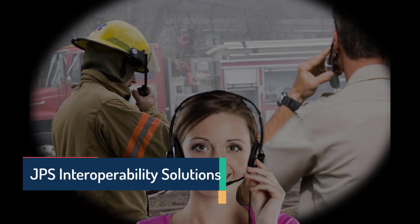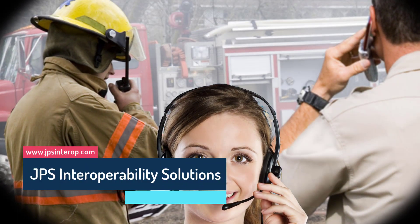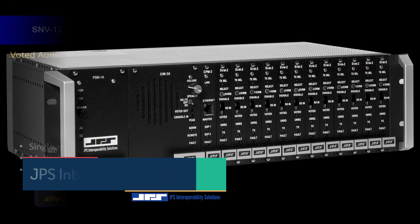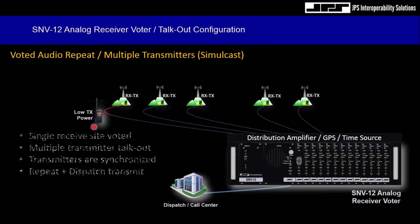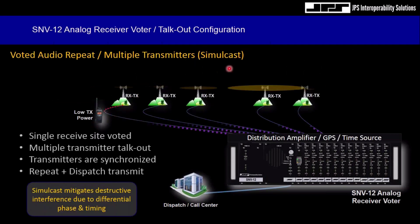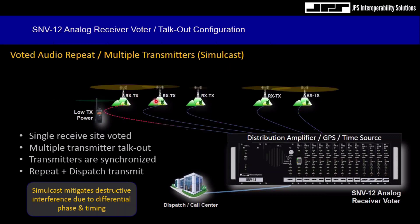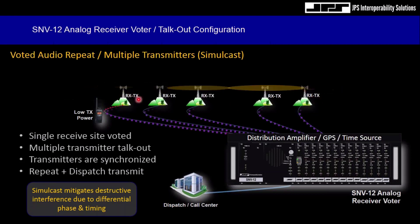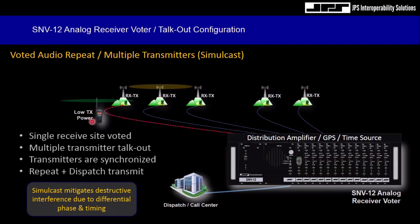This technical series is presented by Iggy Brigado, Senior Sales Engineer for JPS Interoperability Solutions. The simulcast configuration is very similar to multicast, except the transmit and receive frequencies at each remote site are identical throughout the region. Because of this, the subscriber unit does not have to change channels while roaming — it stays on a single channel.